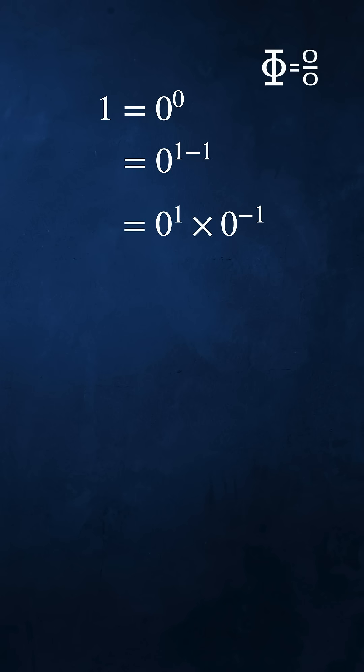Here's the third way. Let's take 0 to the power 1 as 0 over 1 and 0 to the power minus 1 as 1 over 0. Now 0 over 1 times 1 over 0 equals 0 times 1 over 1 times 0.